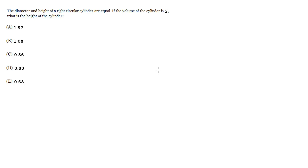The diameter and height of a right circular cylinder are equal. If the volume of the cylinder is 2, what is the height of the cylinder?